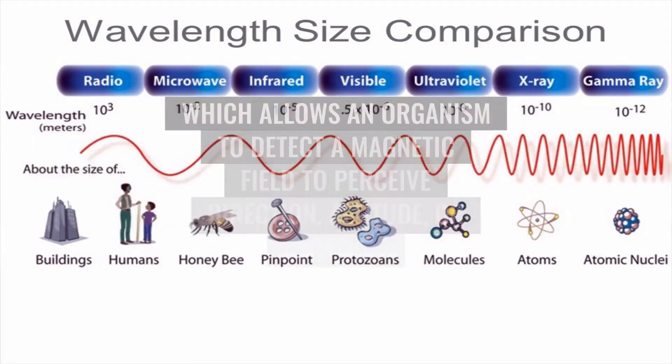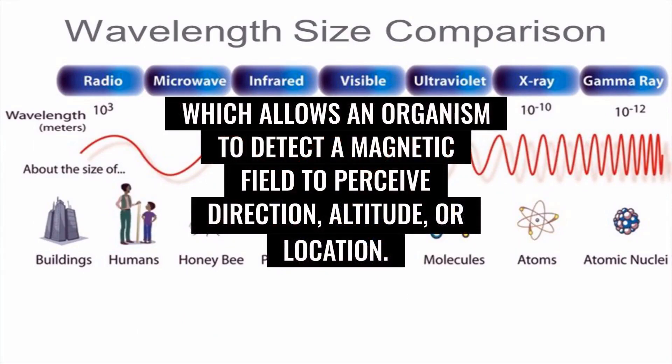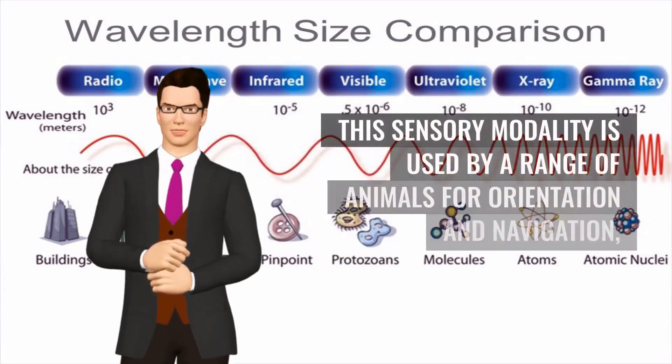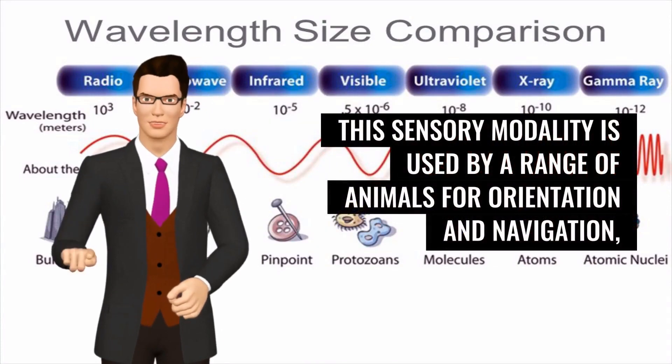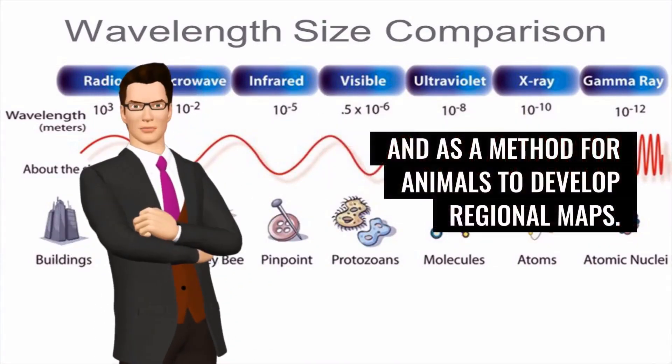Magnetoreception is a sense which allows an organism to detect a magnetic field to perceive direction, altitude, or location. This sensory modality is used by a range of animals for orientation and navigation, and as a method for animals to develop regional maps.